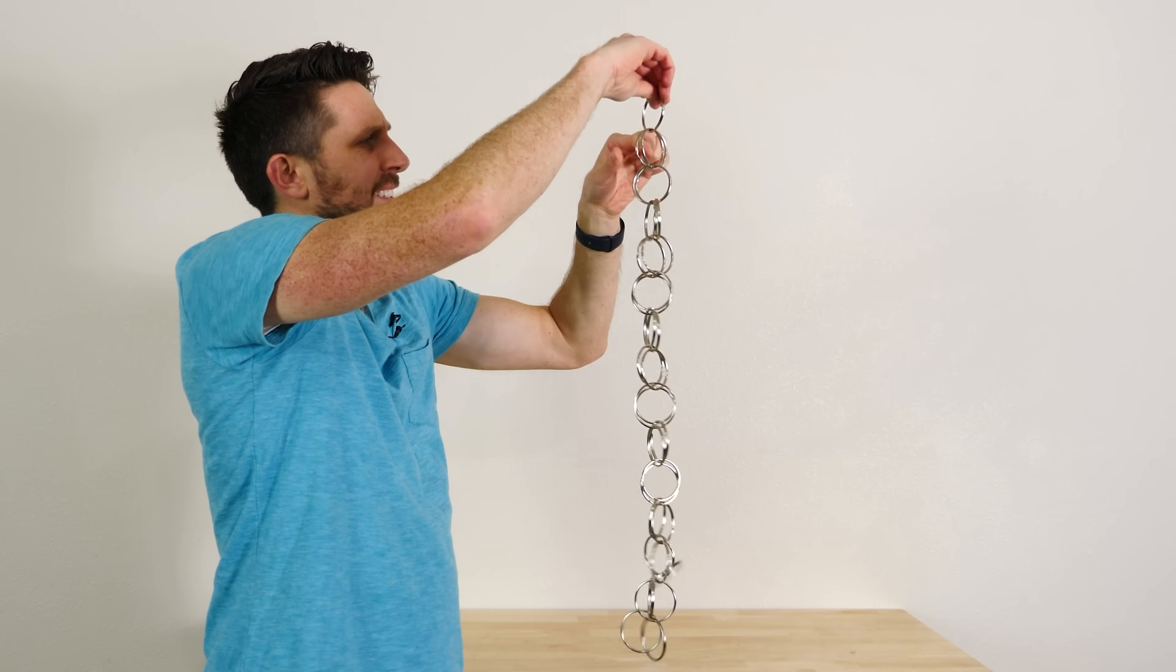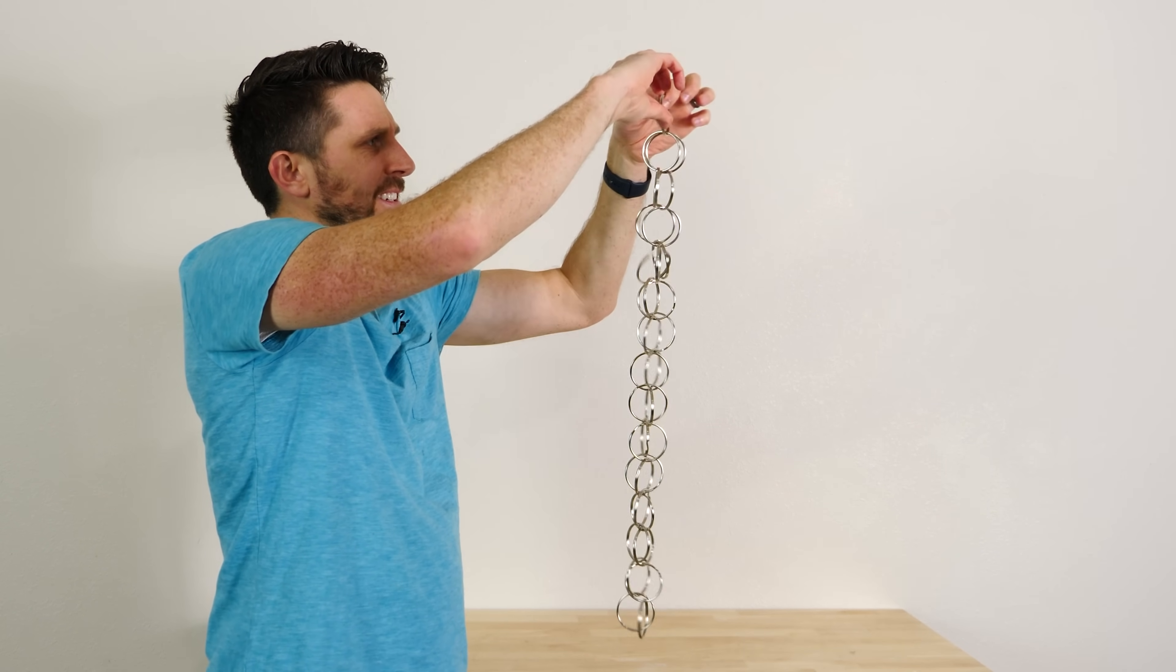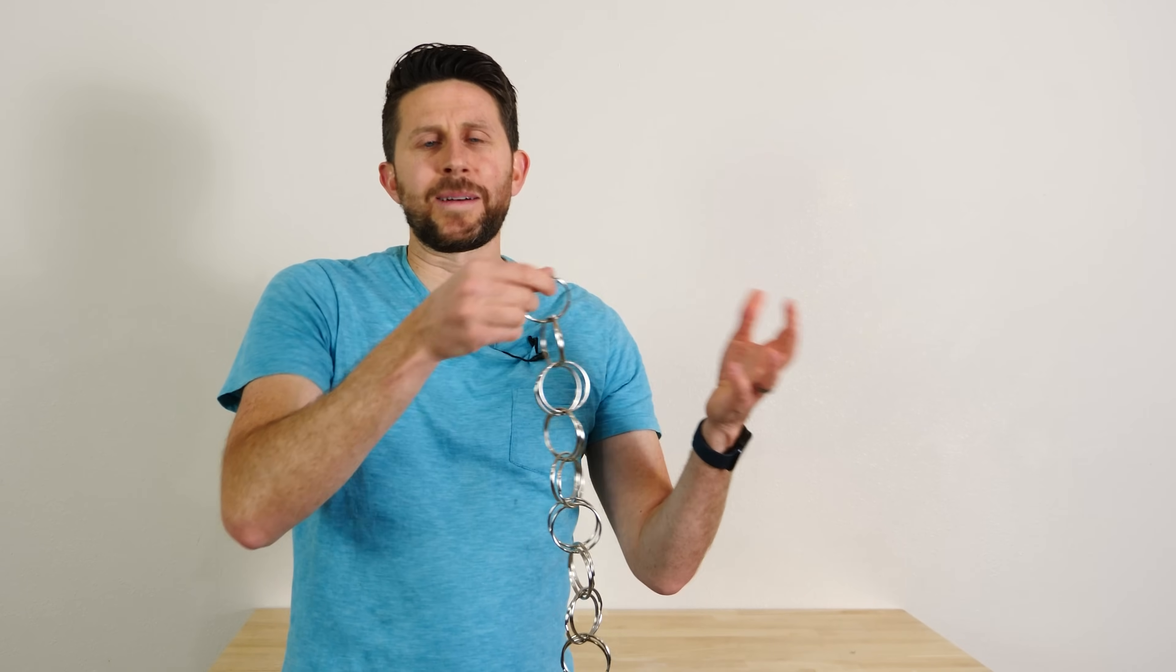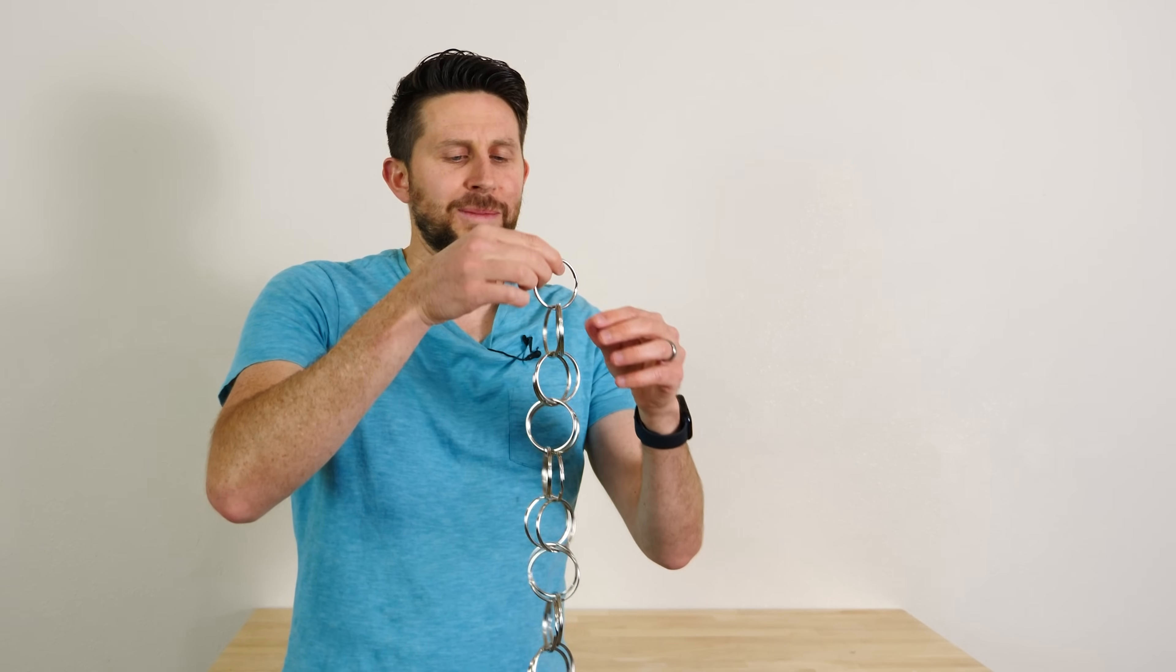So the question is how is this working? If these rings are looped together securely, how is it falling from the top to the bottom? First to make sure it's not camera trickery, you can see how my wife reacts to it with her first time seeing it in person. I'll let her even handle it and hold it herself.